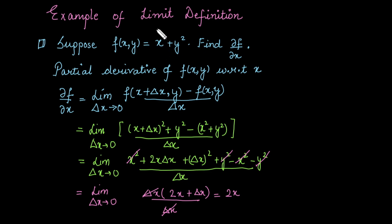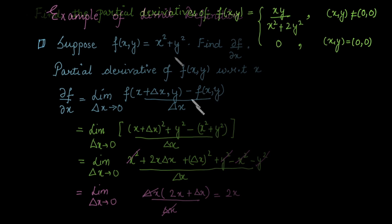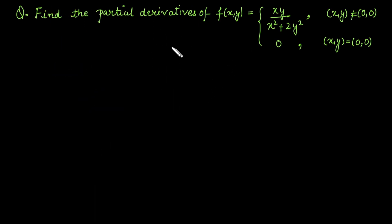Although it is very easy to find the partial derivative directly, there exist certain problems where we need to find the partial derivative at a particular point but by direct calculation we are not getting the answer. For example, in this case we need to find the partial derivative of this function, which is defined as: at the origin the function value is 0, and except at the origin the function is defined by this form. We need to find the partial derivative of the function at the origin.